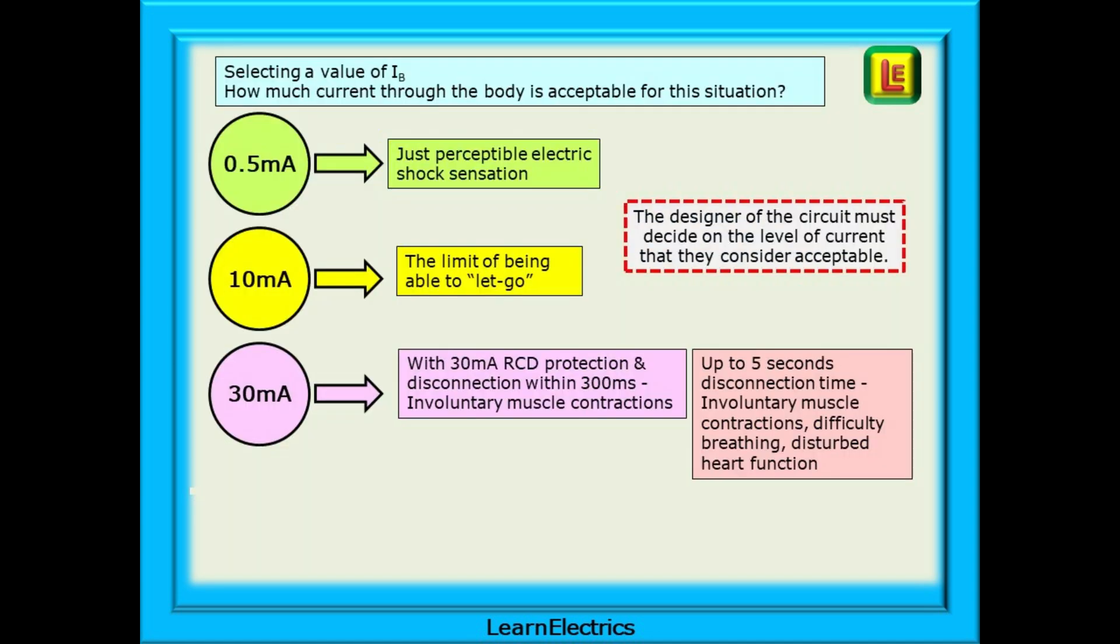This slide shows the effects of electric current on the human body when the line voltage is 230 volts AC. At less than 0.5 milliamps, the user will barely feel an electric shock. As the current increases, there comes a point where it is difficult to let go of a conductive part or cable. At 30 milliamps, we are approaching the limit of what is a recoverable electric shock. Involuntary muscle contractions will be noticed and an inability to let go. It is recommended that an RCD is installed to disconnect the supply in 300 milliseconds or less, and this will help to make the shock recoverable. A longer exposure to shock will make breathing difficult and may cause a disturbed heart function and more serious problems.